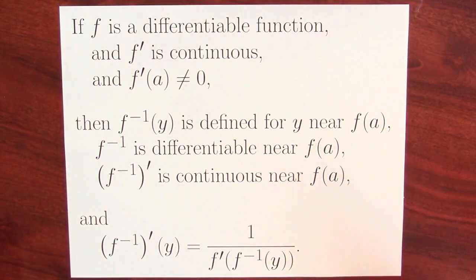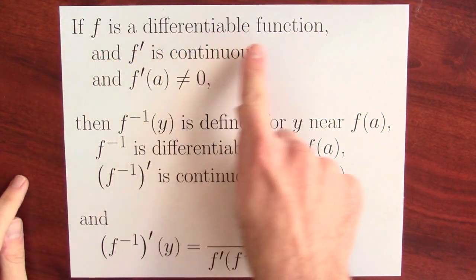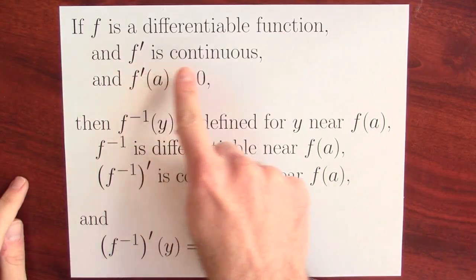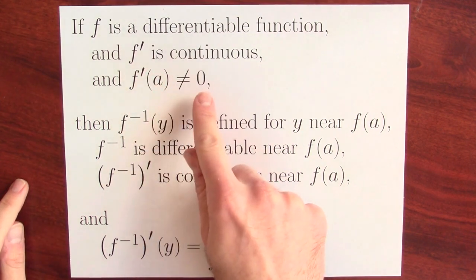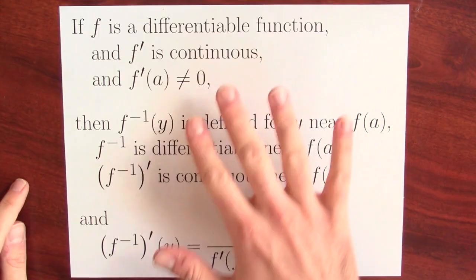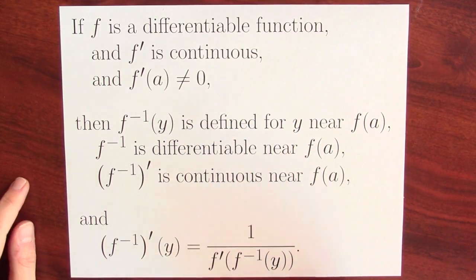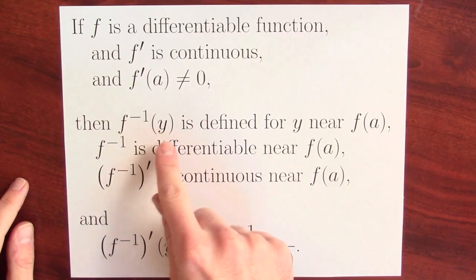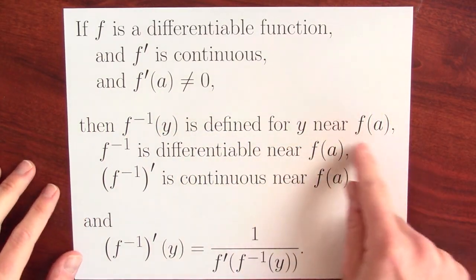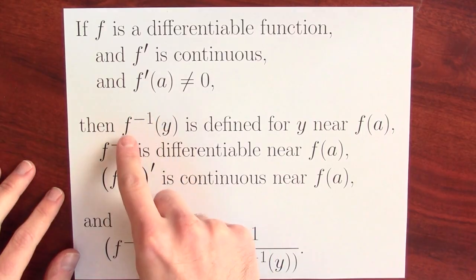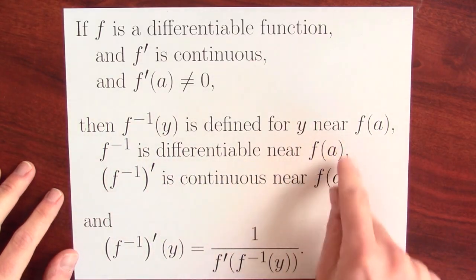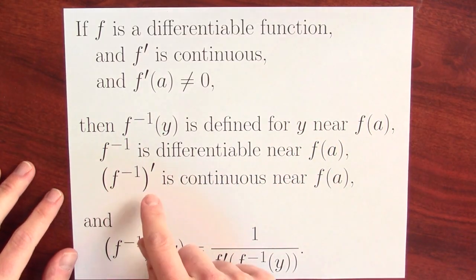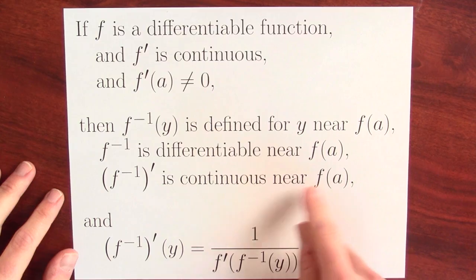Here is the inverse function theorem. I'm going to suppose that f is some differentiable function, f prime is continuous, and the derivative at some point a is non-zero. In that case, the inverse function at y is defined for values of y near f of a, so the function f is invertible near a. The inverse function is differentiable for inputs near f of a, and that derivative is continuous for inputs near f of a.